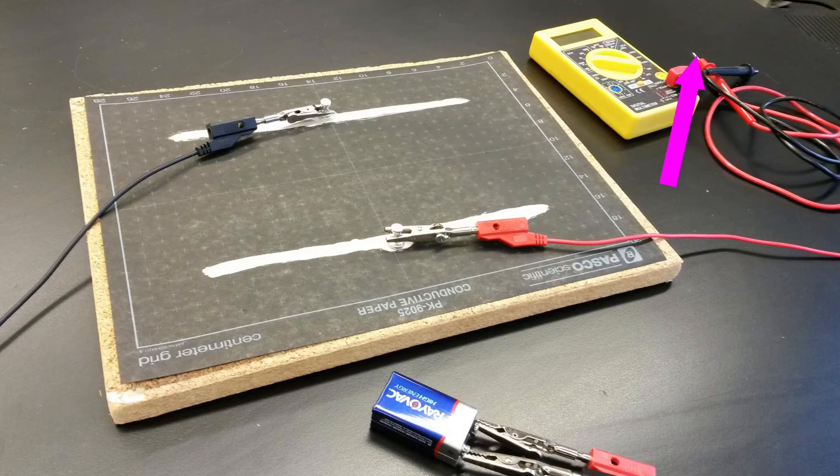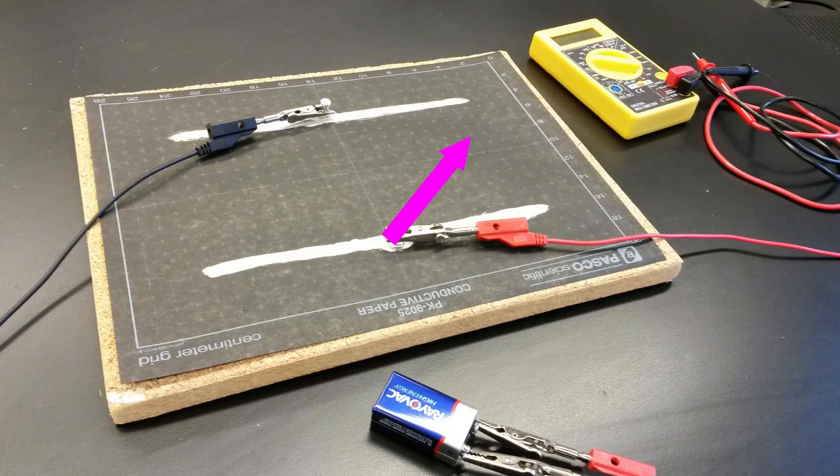Touch the other probe to a spot on the paper and record the voltage and position. Move the second probe and find another point that has the same voltage. Continue until you've found enough points to make a closed circle or a line that goes off the edges of the paper.